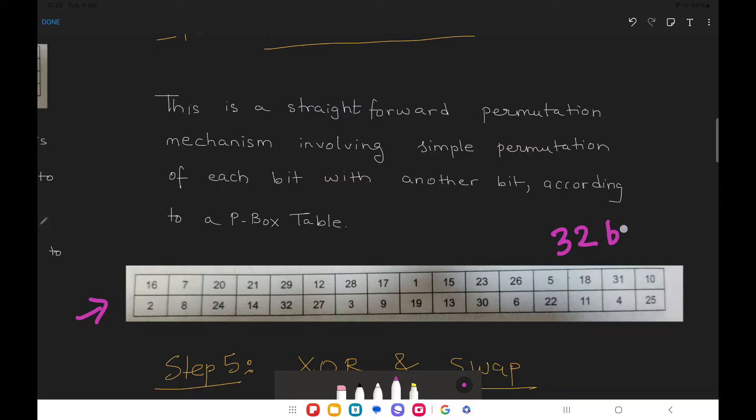So in total 32 bits are present inside it and no value inside the table is more than 32. So what exactly happens over here is the 16th value of the RPT goes to the first position of the new matrix. Similarly the 7th value of the RPT now goes to the second position over here and similarly 20th value will now come to the third position and so on.